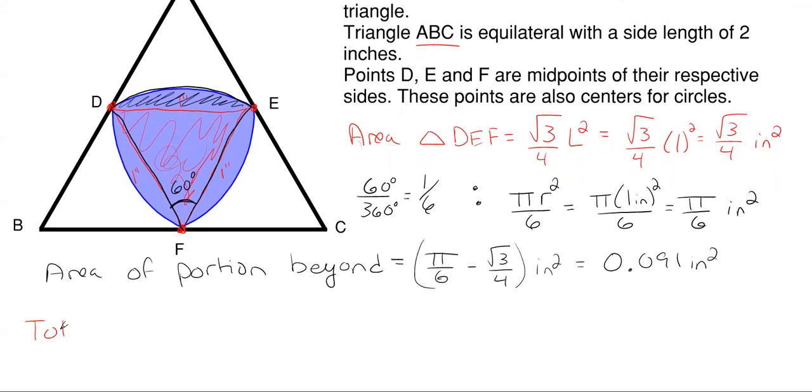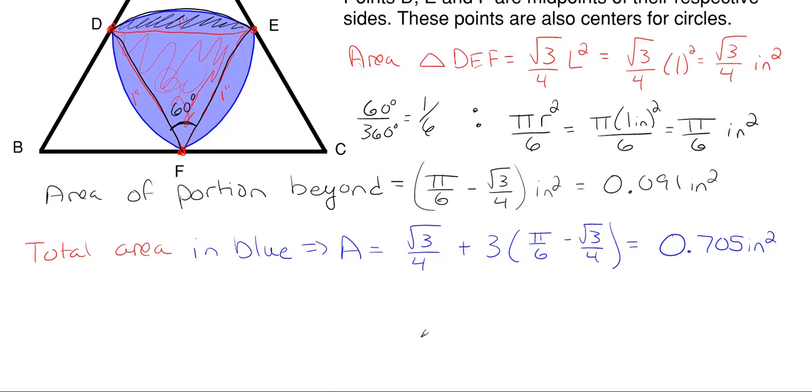So my total area in blue is going to be my equilateral triangle of square root of 3 over 4 inches squared, plus 3 of these portions right here, because we have 3 extending beyond each side of our triangle. So 3 times pi over 6, minus off the square root of 3 over 4. And this will approximately give me 0.705 inches squared as my answer, or if you want to put it in exact terms, you can rearrange this, and then you would get pi minus square root of 3 over 2, once you fill all of this out, inches squared. So that's the exact answer, and that's the approximation answer.